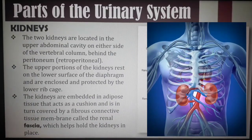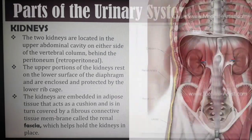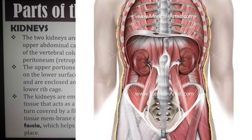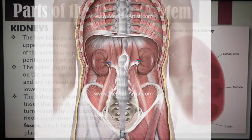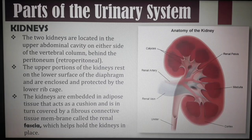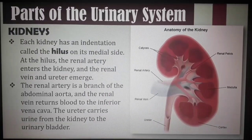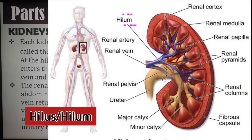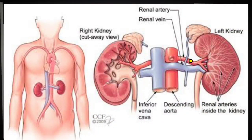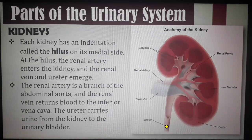The two kidneys are located in the upper abdominal cavity on either side of the vertebral column, behind the peritoneum. The upper portions rest on the lower surface of the diaphragm and are protected by the lower rib cage. The kidneys are embedded in adipose tissue that acts as a cushion, covered by fibrous connective tissue called the renal fascia, which helps hold the kidneys in place. Each kidney has an indentation called the hilum on its medial side, where the renal artery enters and the renal vein and ureter emerge.